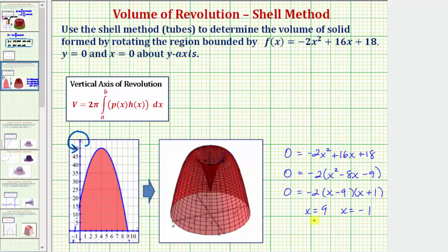So these are the two vertical intercepts of the function f of x, which is here on the left and here on the right. But notice how because the region is also bounded by x equals 0, the vertical axis, the limits of integration will be from 0 to 9, not negative 1 to 9.